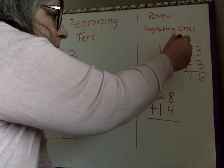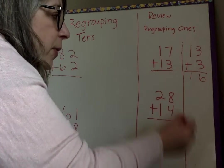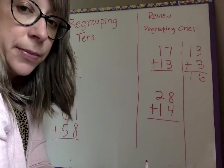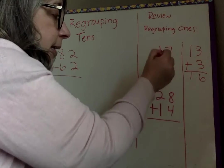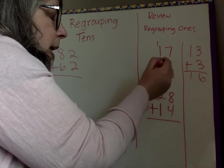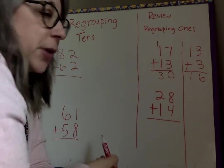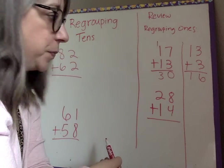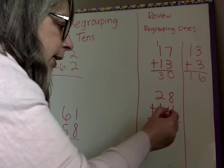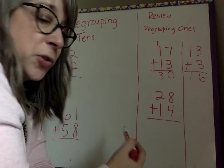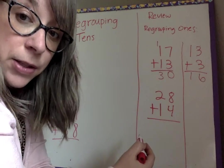But here's our regrouping ones. Okay, remember we have to add our ones place first. So 7 plus 3. So 7, 8, 9, 10. And then 1 plus 1 plus 1 is 3. 1, 2, 3. So it's 30. And again, if you want to put little dots on there, or you use your fingers, I don't really care. You can do what you need to do.